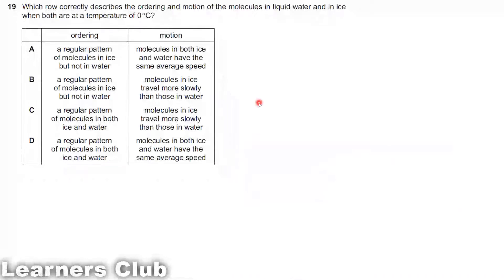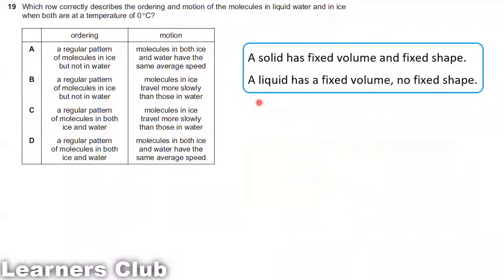Question 19. Which row correctly describes the ordering and motion of the molecules in liquid water and in ice when both are at a temperature of 0 degrees Celsius. First of all, you should know a solid has a fixed volume and fixed shape, but for a liquid, liquid has a fixed volume but no fixed shape. Also they are talking about a constant temperature, 0 degrees Celsius.